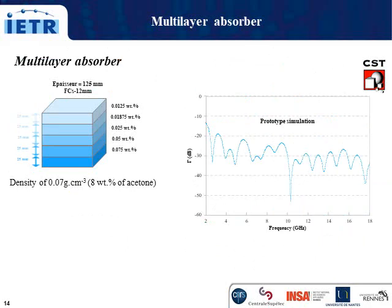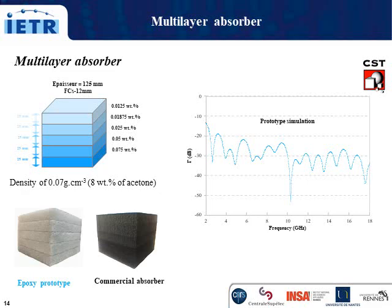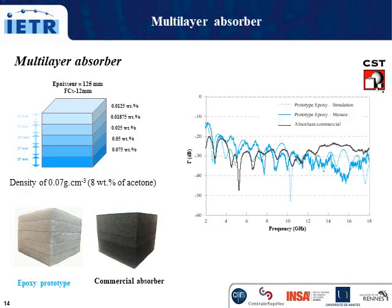The simulation of the absorption performance was first done using the CST software and the presented dielectric properties. The thickness for this simulation is 125 mm, which is often used for commercial multi-layer absorbers. This simulation predicts good absorption performance with a reflection coefficient lower than minus 13 dB in the full frequency range, which means that more than 95% of incident waves are absorbed. The multi-layer prototype is carried out with these 5 layers, and the measurement of this prototype is done and compared to the simulation and the measurement of the commercial absorber. We can notice that the measurement of the realized prototype shows a reflection coefficient curve quite similar to the simulated one.